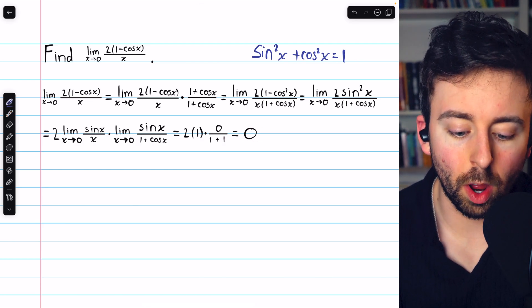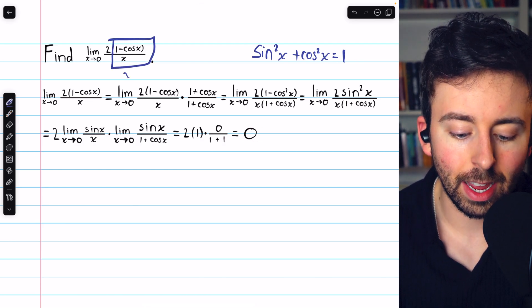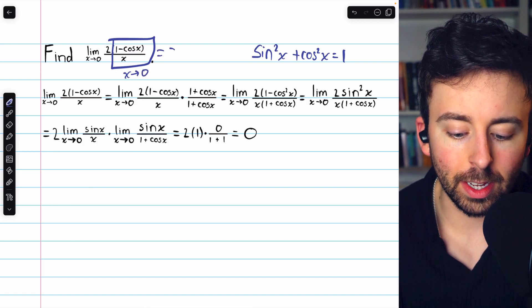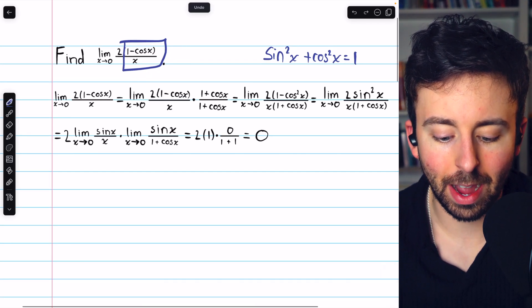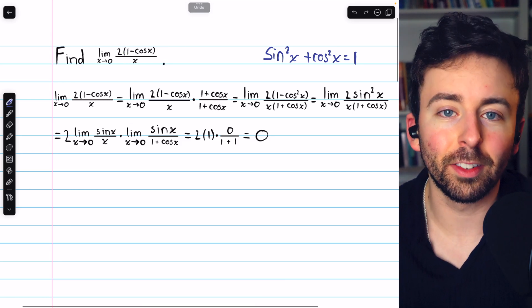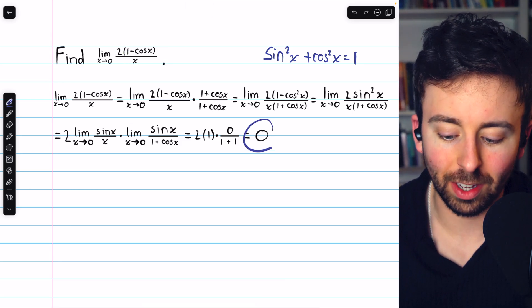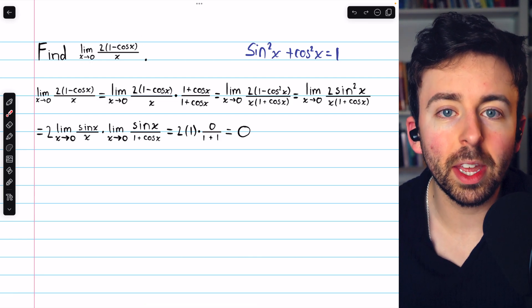Now, you may have known from the jump that 1 minus cosine x over x, as x approaches 0, is equal to 0. And if you know that, then of course having a factor of 2 in the numerator doesn't change that fact. It's still just 0. So that's how to evaluate this simple trig limit.